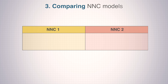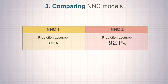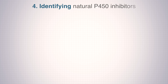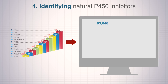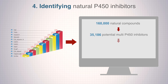Between the two NNC models, NNC2 exhibited higher prediction accuracy upon testing with a larger and structurally more diverse set of compounds. Finally, we used NNC2 to scan about 160,000 natural compounds and identified 35,186 potential multi-P450 inhibitors, among which alkaloids emerged predominant.